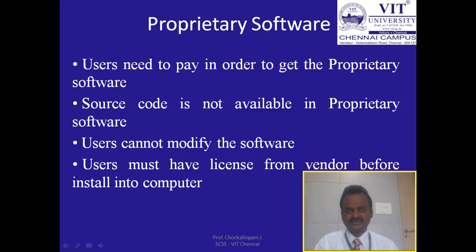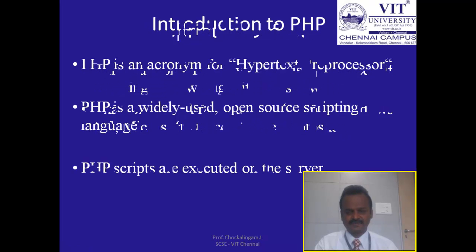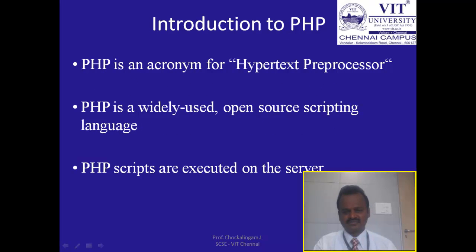Proprietary software requires the user to pay some amount to obtain it. The source code is not available to the user, and users cannot modify the software. Users must have a license from the vendor before installing it on their computer. Full support from the vendor is provided if anything goes wrong. Examples of proprietary software are the Windows operating system, Microsoft Office, and Adobe Photoshop.